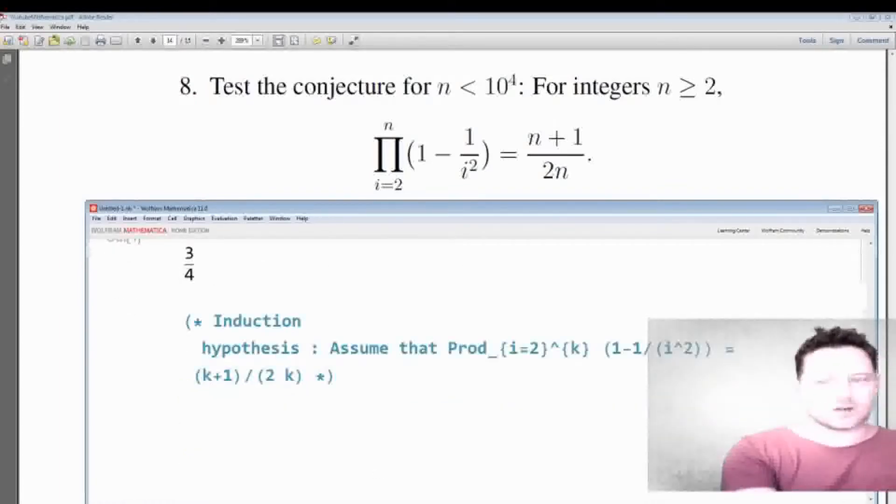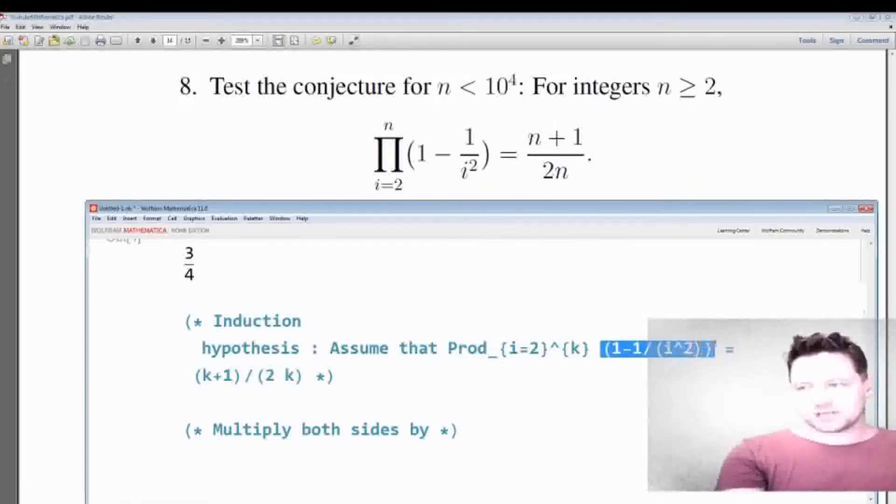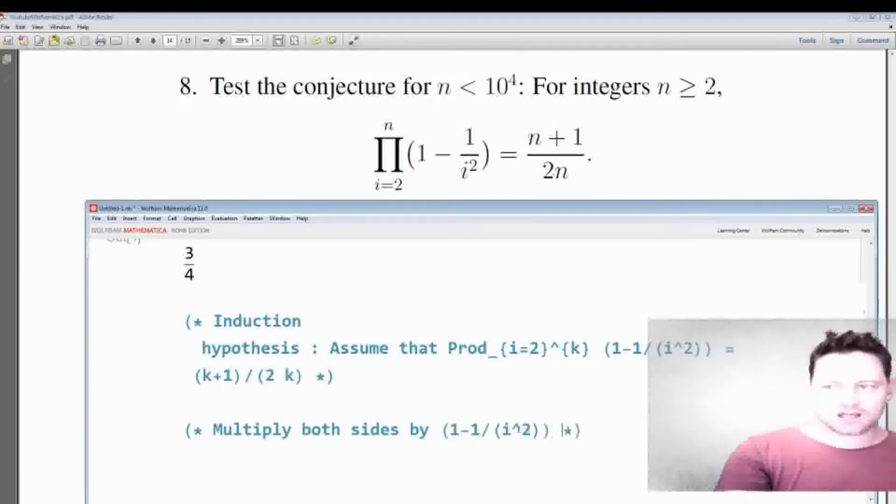So in comment form, I'm going to say that we can do this to get the statement for k plus 1: multiply both sides by the next term, right? So this is a product, so that's why I'm multiplying. Okay, so the next term would be this, except rather than i, I'll replace this with a k plus 1.